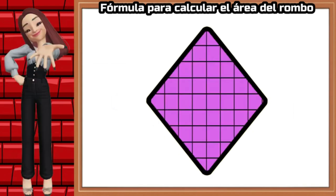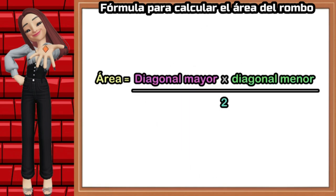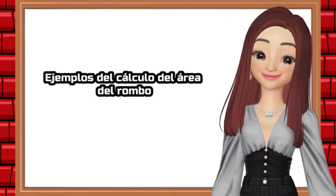The formula to calculate the area of a rhombus is: area equals major diagonal times minor diagonal divided by two. I will show you some examples.